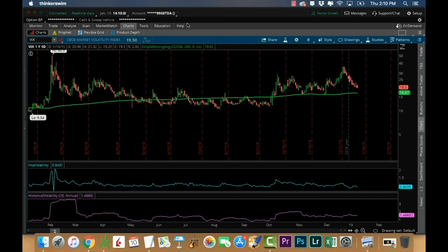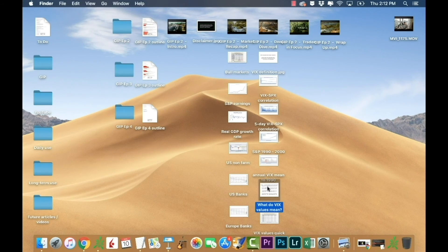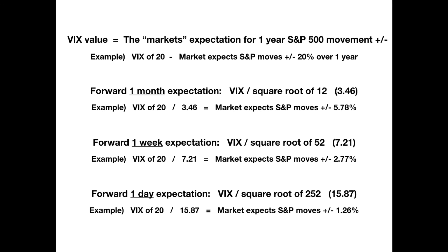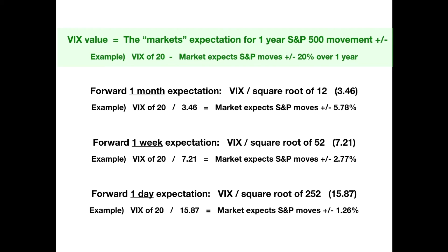So the VIX is 20 — but 20 what? What does that number actually mean? In the case of the VIX, the 20 is actually a percentage. Some people think it's a price, maybe $20, but it's actually 20%. I've got a slide here to clear that up. Remember, the VIX value is the market's expectation for one-year S&P 500 movement, so a VIX of 20 means the market expects the S&P 500 to move plus or minus 20% over the next one year.